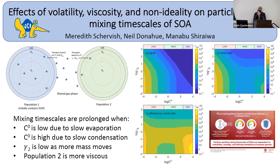Meredith, postdoc at UCI, presents work using the kinetic multi-layer model KM-GAP to simulate mixing timescales of different SOA populations. Two particle populations are set up with a semi-volatile species initially in one population, and mixing occurs via transport to the other. Properties of the semi-volatile species and particle bulk are varied. Results show that mixing timescales are prolonged when populations are more viscous, at extremes of volatility, and when the semi-volatile species is favorably miscible in the second population — important for assessing when rapid mixing assumptions in large-scale models break down.